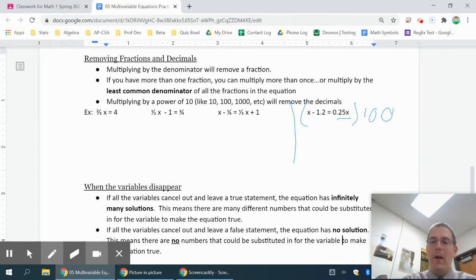Now remember, multiplying by 100 just adds zeros. So x times 100 is 100x, and 1.2 times 100, I would move the decimal two places, so that would be minus 120. And 0.25 times 100, move the decimal two places, is 25x.